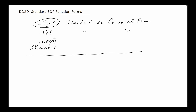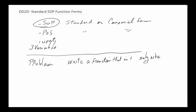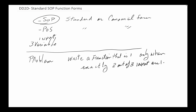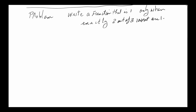Let's start by saying what the problem is that we are trying to work with. We are being asked to write a binary function that is one only when exactly two out of three inputs are one. So we want to build a system where when two inputs equal one, the output becomes one.